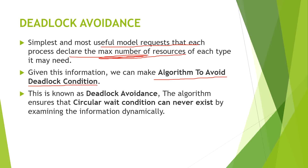The deadlock condition refers to the state from where the system will go into deadlock — on that condition we have to avoid the deadlock. This is known as deadlock avoidance. By deploying this information table and deadlock condition avoidance, this is collectively known as the deadlock avoidance algorithm. The algorithm ensures that the circular wait condition can never exist, because this is the main condition in deadlock.